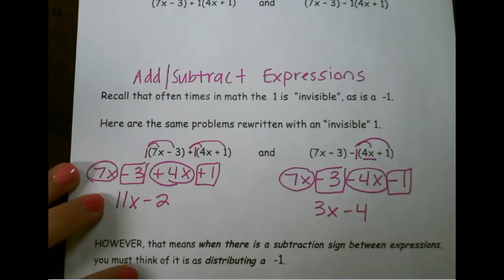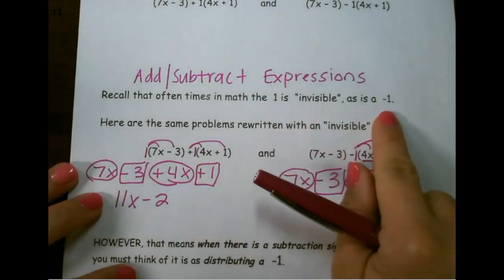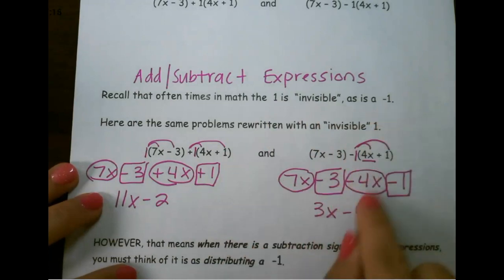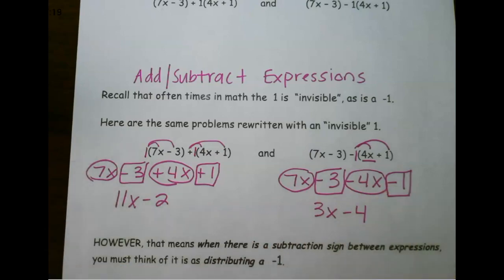So don't forget, 1 can always be invisible as well as negative 1. And don't forget to flip your signs and pay attention to the sign in front of each term when combining.